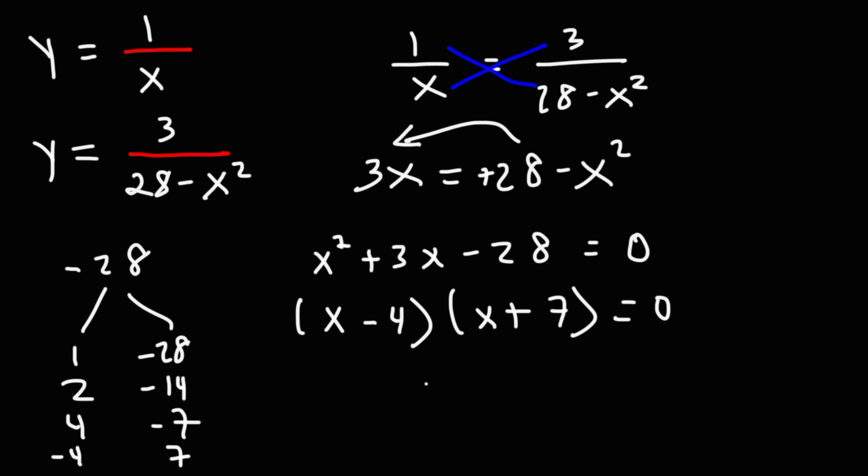Now, using the zero product property, we're going to set each of these factors equal to zero and solve for x. So for this equation, if we add 4 to both sides, we get that x equals 4. And for this one, if we subtract both sides by 7, we get that x equals negative 7.